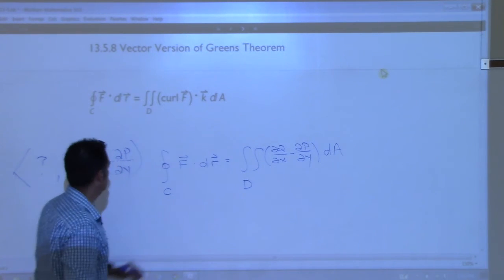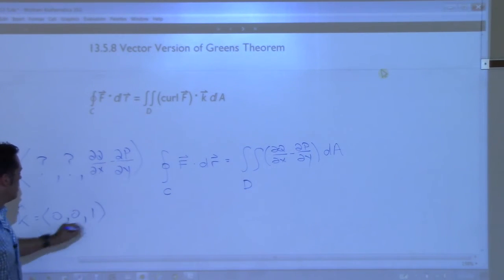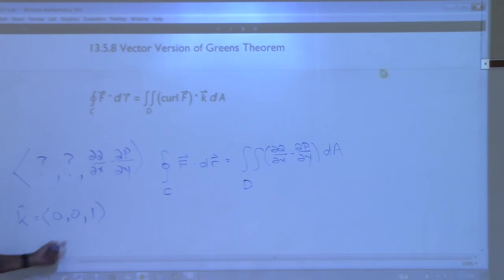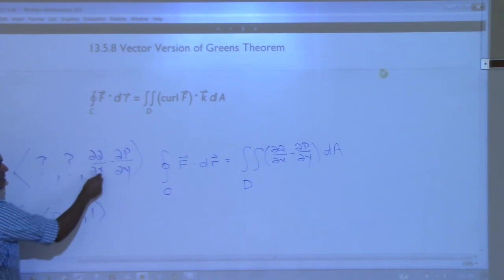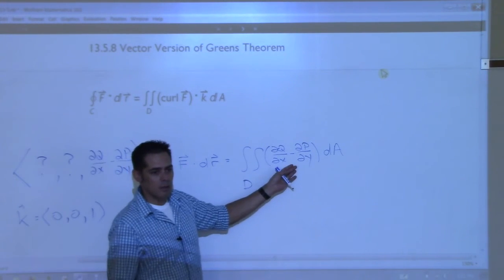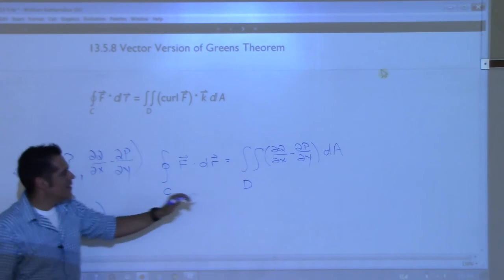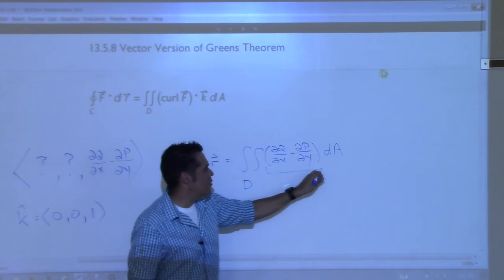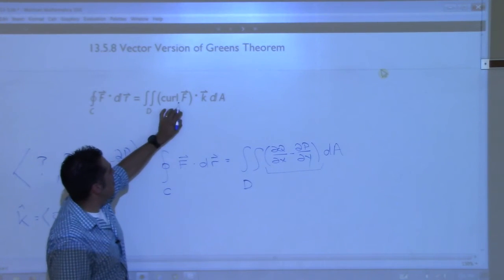So it's just another way of writing Green's Theorem. We can use this later in later sections - sometimes we'll use this formula instead because maybe we'll know that the curl is zero or something. We need a scalar function inside the double integral, which means when we dot the curl with k̂, we get a scalar function. That's the notation we use: curl F dotted with k̂ dA.